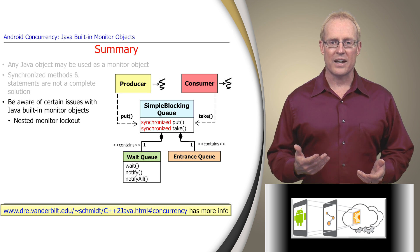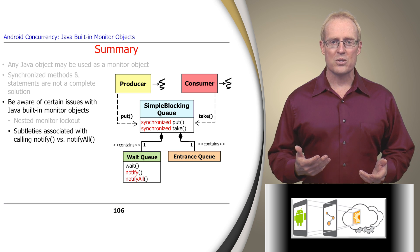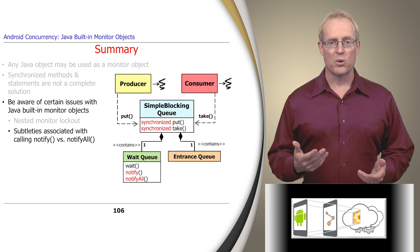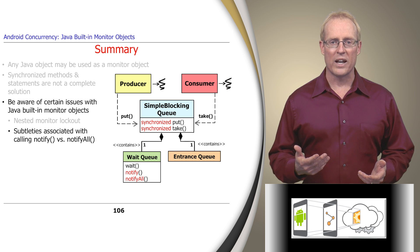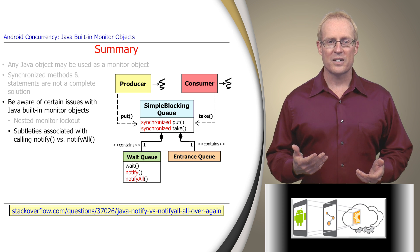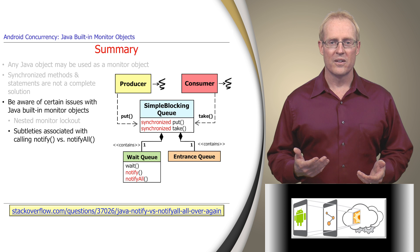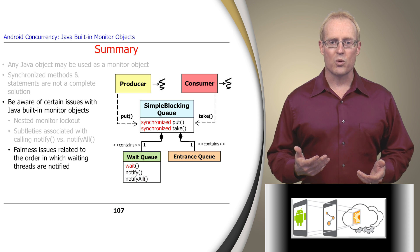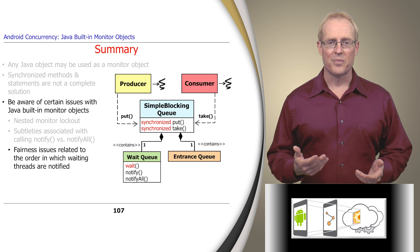There are also subtleties related to the wait queue of a Java built-in monitor object, which supports both notify and notifyAll methods. Notify wakes up a single thread waiting on the monitor condition, whereas notifyAll wakes up all threads waiting on the condition. There are situations where a program may need to tightly control the order in which threads are unblocked when a condition changes, rather than relying on the arbitrary built-in semantics of Java's notification mechanism.